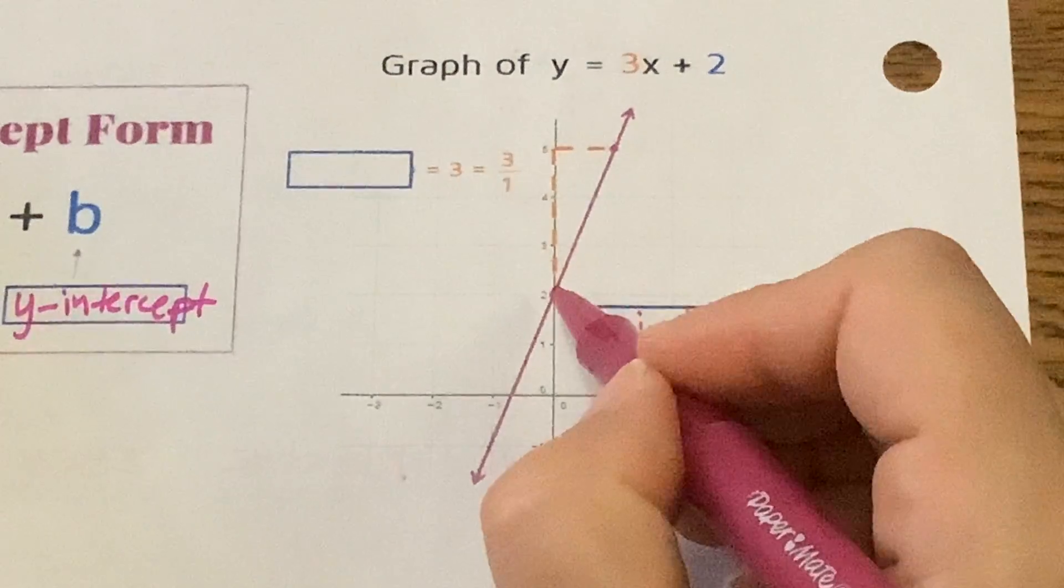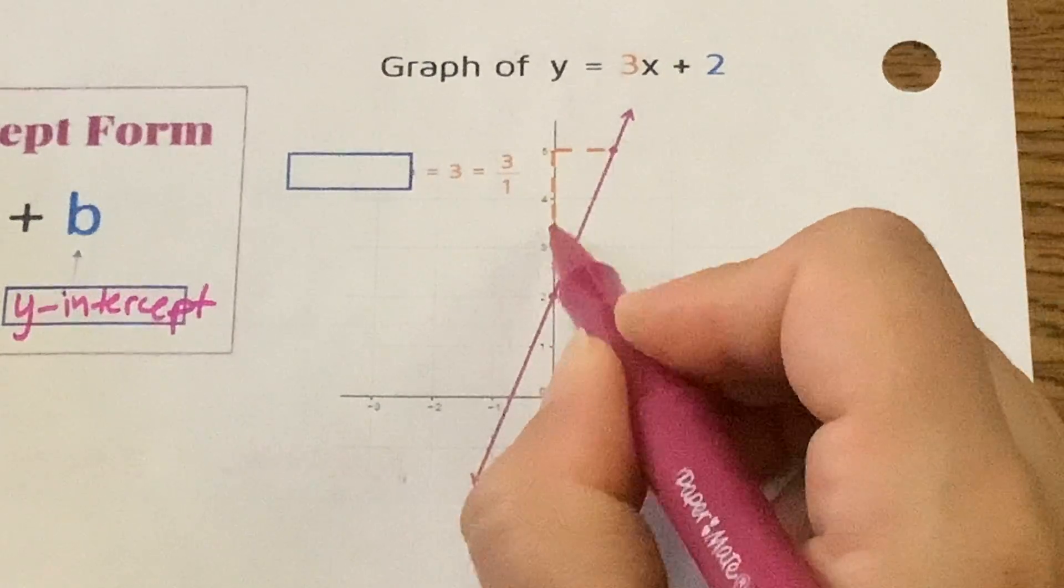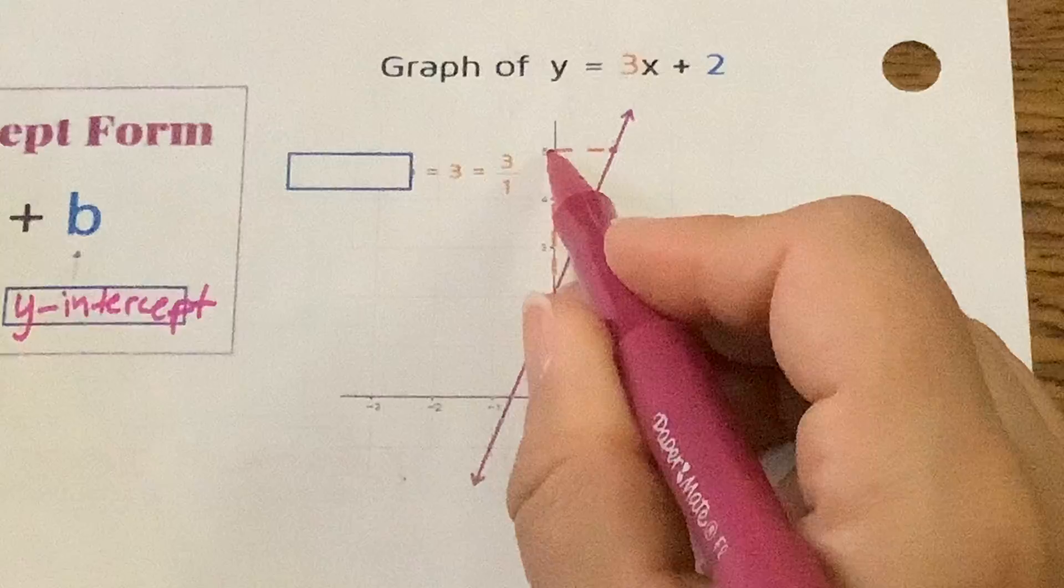All right, now, if we were to calculate slope, you see they gave us an ordered pair here and up here. How far up is this? Three. And how far over? Two.